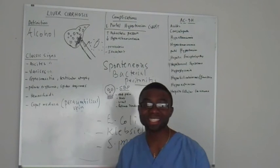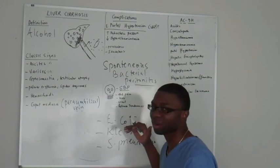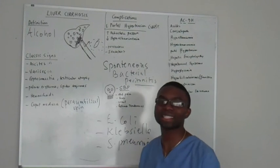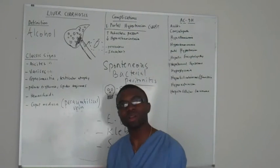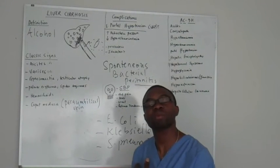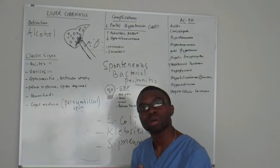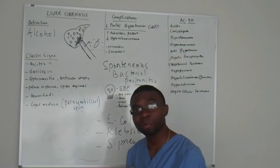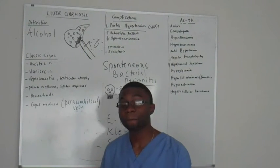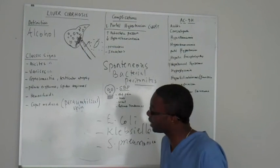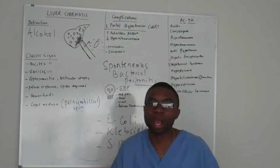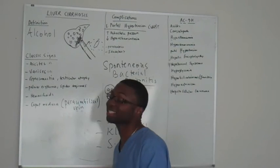They cause UTIs, cholangitis. E. coli — you know where E. coli is originally from? It comes from your poop. It stays in your gut, but unfortunately if it's able to sneak out, you've got an infection.